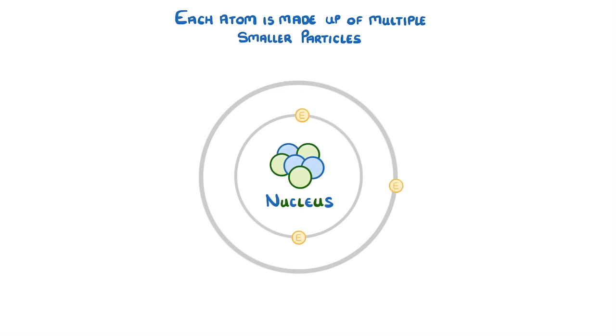The nucleus itself is made up of two different types of particles, protons and neutrons, which are packed together in a tight ball.